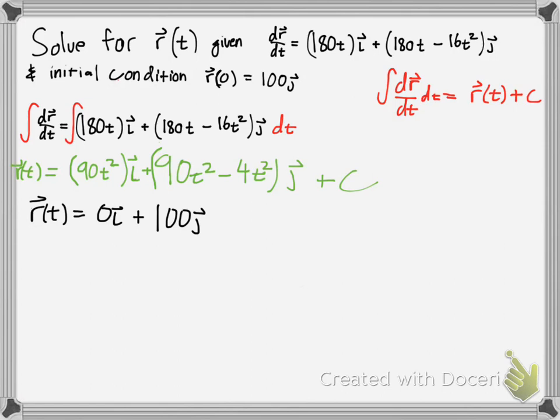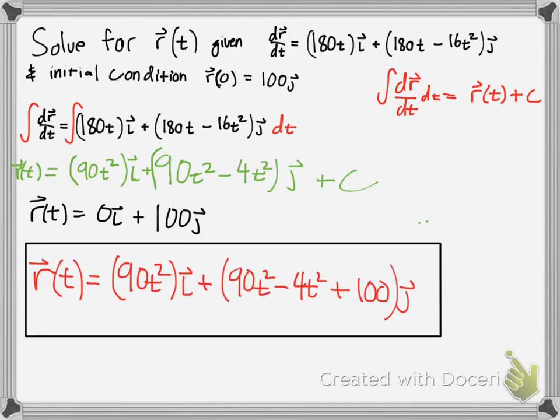90t squared plus 0, still 90t squared. But then we have the j component, 90t squared minus 4t cubed, plus 100. And that's pretty much the answer, you just add the 100 portion there.